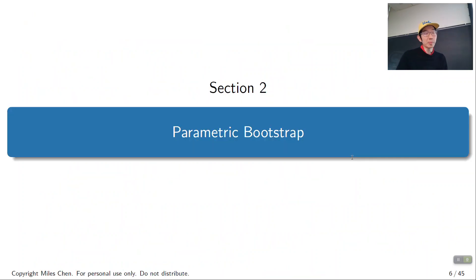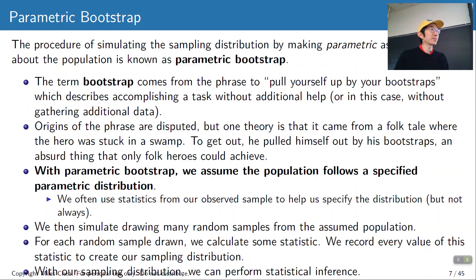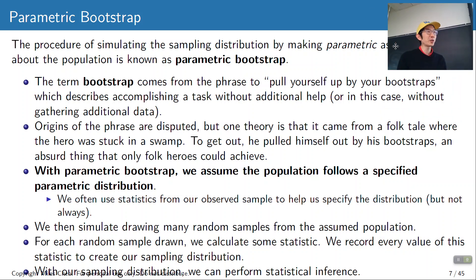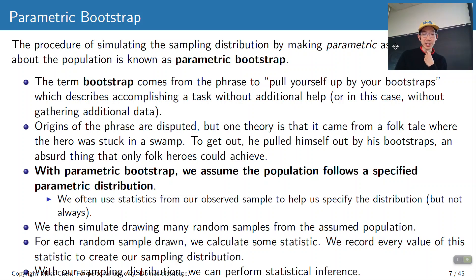We'll take a look at the parametric bootstrap first. The procedure of simulating the sampling distribution by making parametric assumptions about the population is known as parametric bootstrap. The term bootstrap kind of comes from the idea of pulling yourself up by your bootstraps — it's like the idea of can you accomplish a task without additional help? In the context of statistics, it's like can you do inference without having to gather additional data.